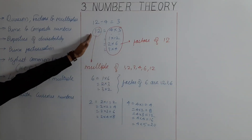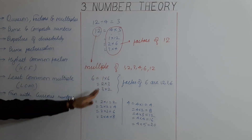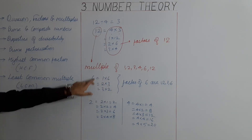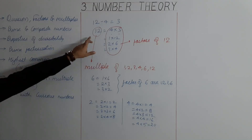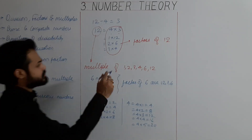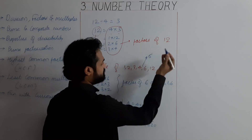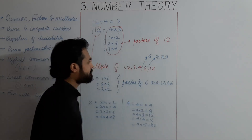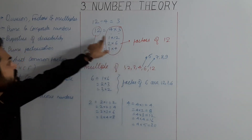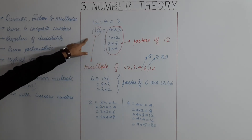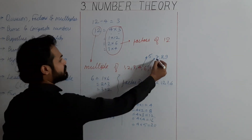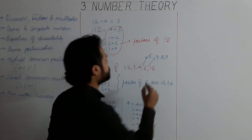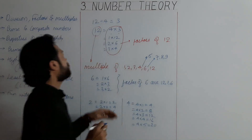For finding factors, just write all possible combinations for that number. All these numbers are factors of 6, and 1, 2, 3, 4, 6, 12 are factors of 12. Note that 5 does not divide 12, so 5 is not a factor of 12. Similarly, 7, 8, 9 are also not factors of 12.